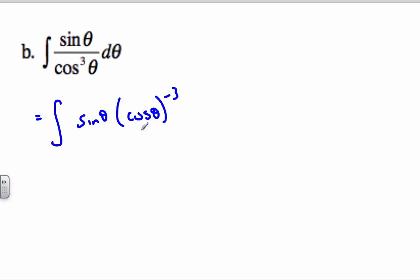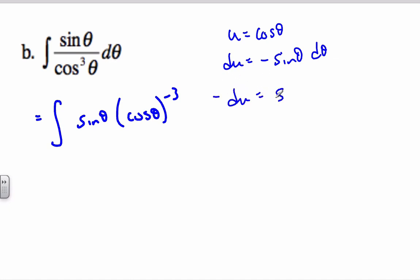And so cosine theta is my U. So we'll make cosine, my U, is equal to cosine theta. So DU is the derivative of cosine is negative sine theta d theta. My negative, I'm going to make this negative DU, sine theta d theta.